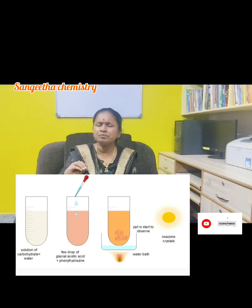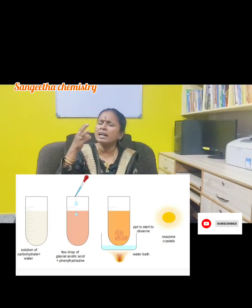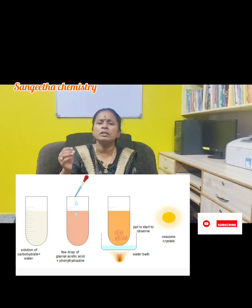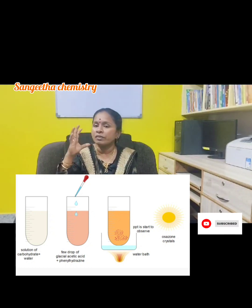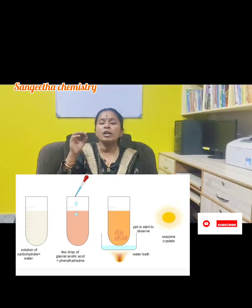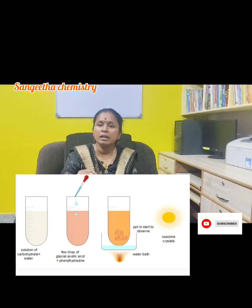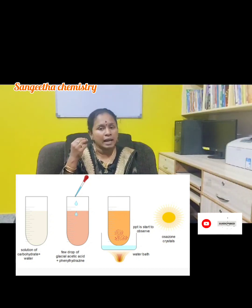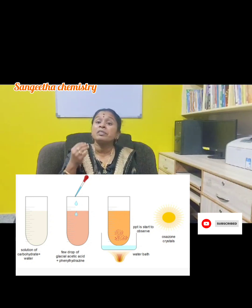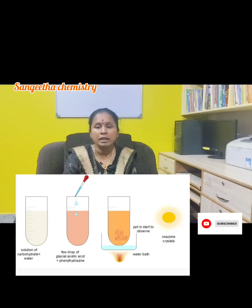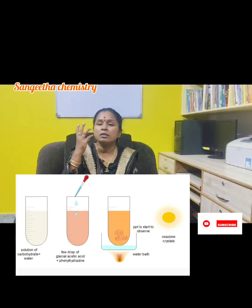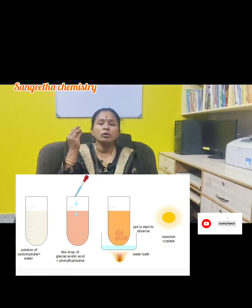In a test tube, add the sample with a small amount of water. Then add 0.5 gram of phenylhydrazine, 0.1 gram of sodium acetate, and 10 drops of glacial acetic acid. Keep the mixture in a water bath.